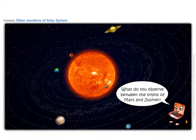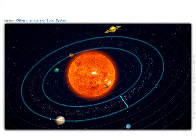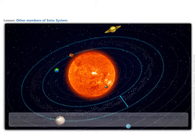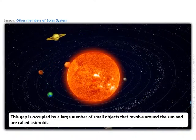What do you observe between the orbits of Mars and Jupiter? There is a large gap between the orbits of Mars and Jupiter. This gap is occupied by a large number of small objects that revolve around the Sun.